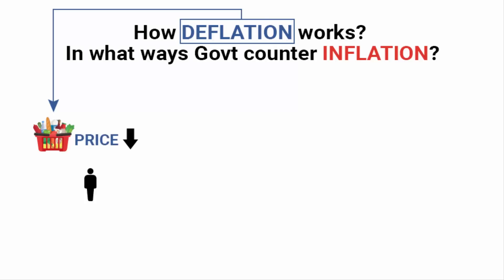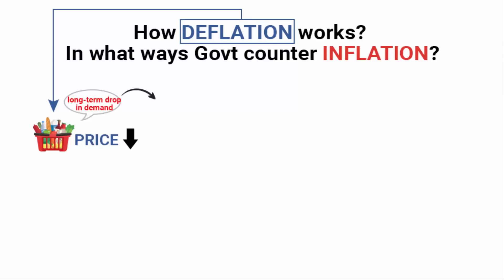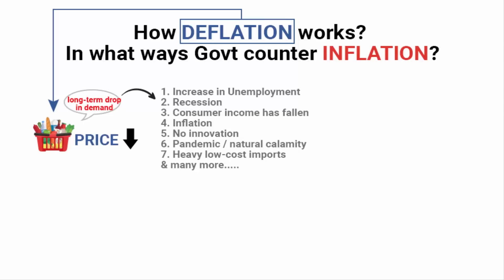When consumer prices fall, it might sound attractive if you want to do shopping, but that's called a discount. When consumer prices fall due to deflation, it simply means there is a long-term drop in demand, not a short-term one. There could be reasons like increase in unemployment, recession, the income of consumers has fallen, outdated items with no innovation, pandemic, too much low-cost imports, and many more. But here, talking about deflation — a fall in consumer prices — inflation cannot be a reason. Apart from that, you can add as many reasons as you can that lead to a drop in demand.